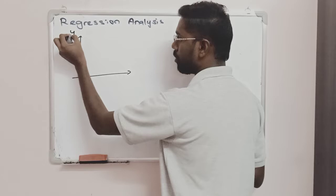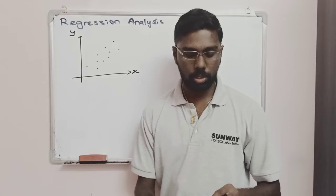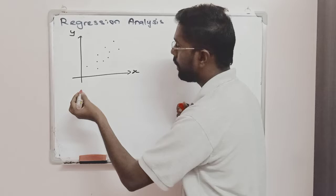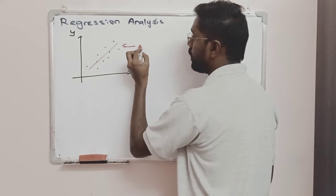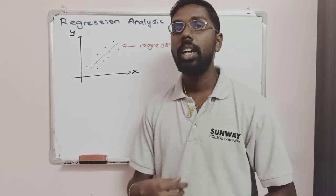When we plot a scatter plot, for example something like this, what we are going to do is fit a straight line. The straight line must fit in between these points and be evenly distributed. The points or plots are going to be evenly distributed, and this line is known as the regression line.